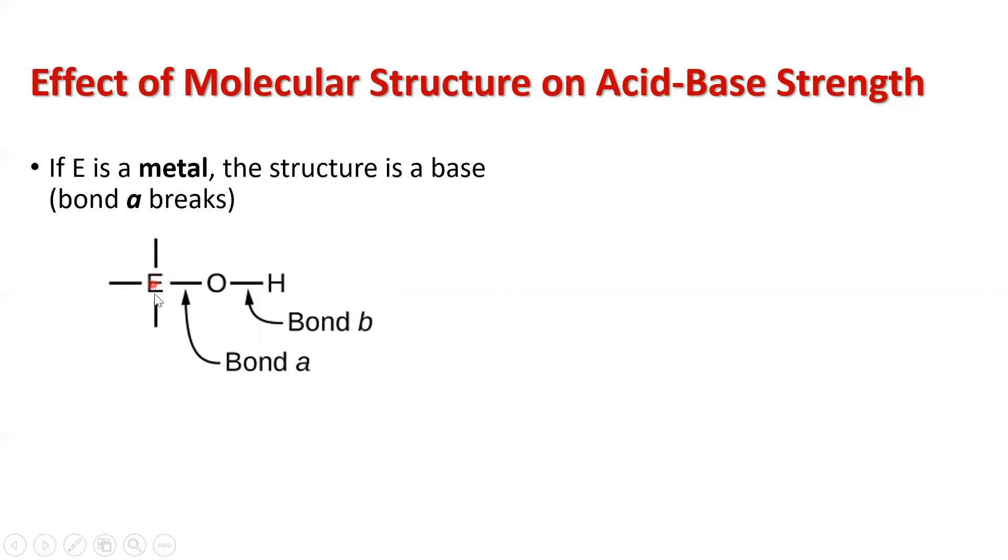If E is a metal, something on the left-hand side of the periodic table, this bond breaks. And if this bond breaks, hydroxide is given off, and it's a base.